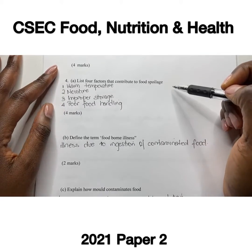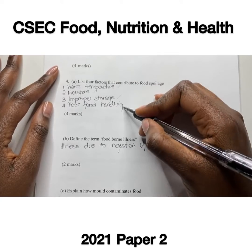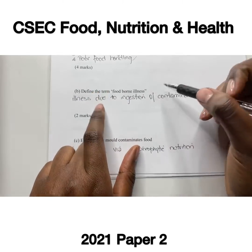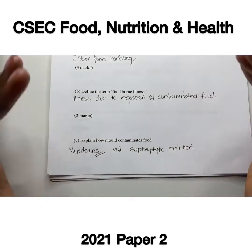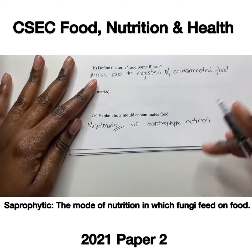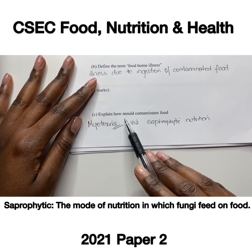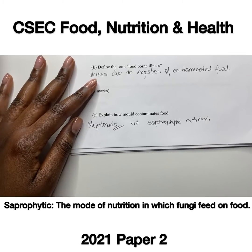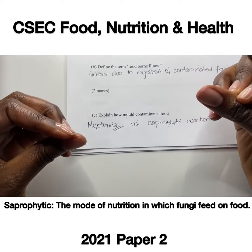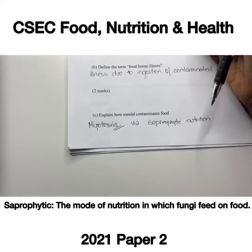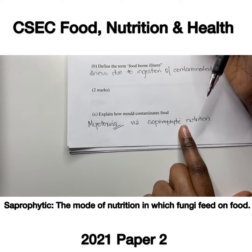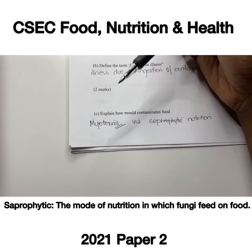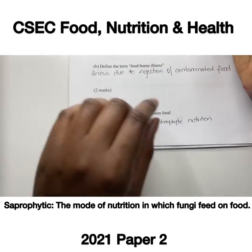Number four asks to list four factors that contribute to food spoilage: warm temperature, moisture, improper storage, and poor food handling. Foodborne illness is a type of illness that occurs in individuals who consume or ingest contaminated food. Mold is a fungus that lives on plants and animal matter — for example, bread left open in the kitchen. Mold contaminates food through saprophytic nutrition; when feeding on the host, it releases mycotoxins, which can cause adverse effects if introduced into our body, ultimately leading to foodborne illness.